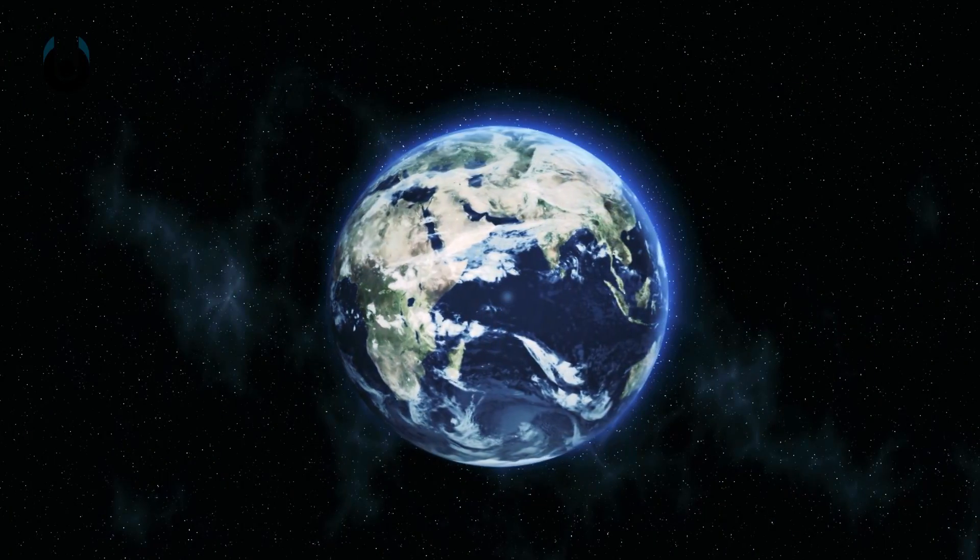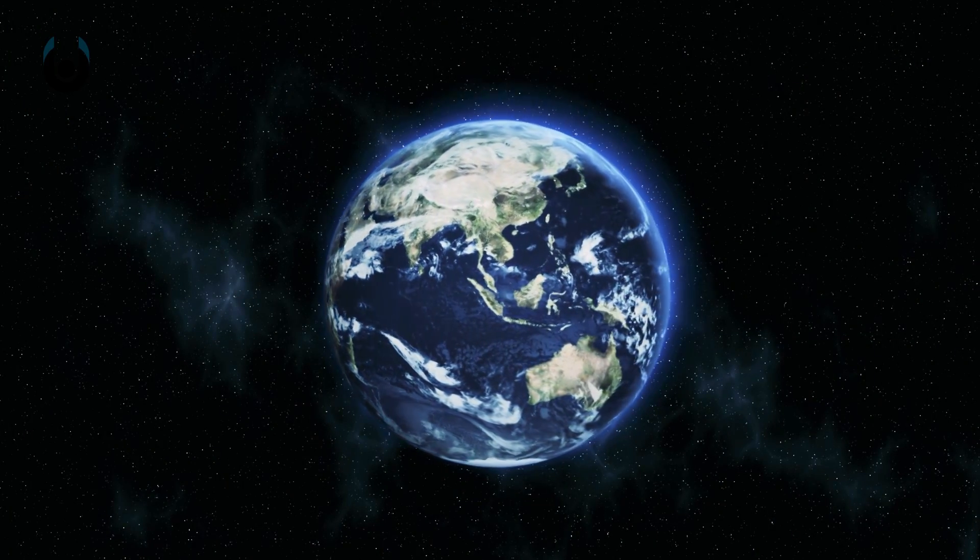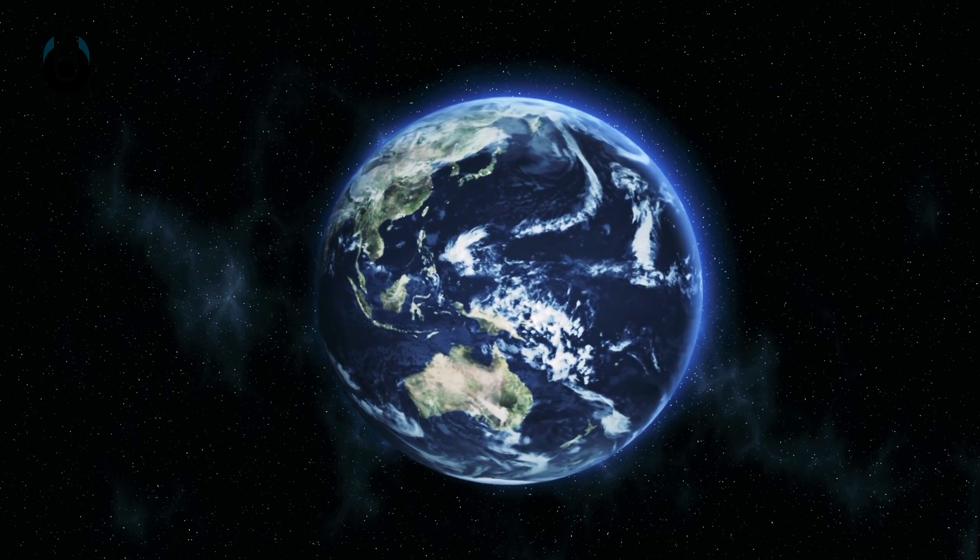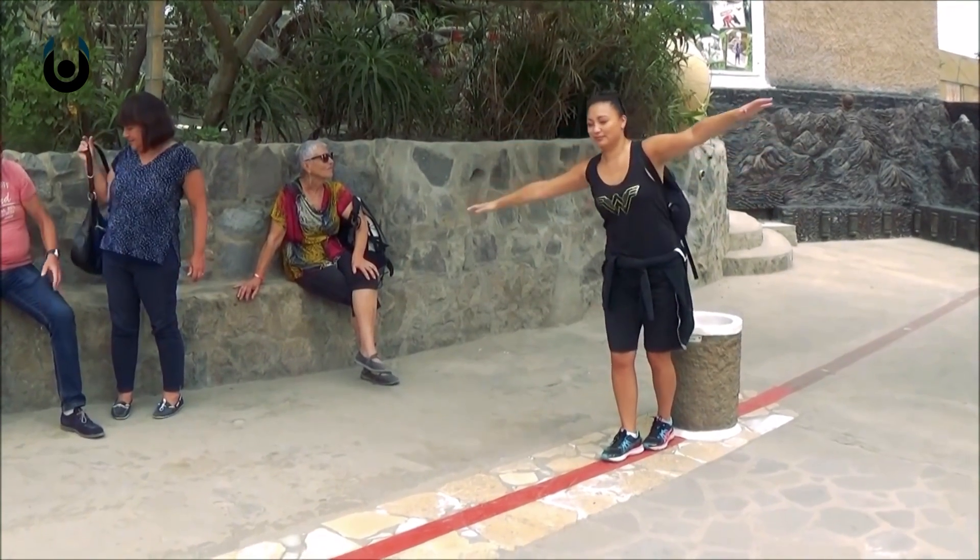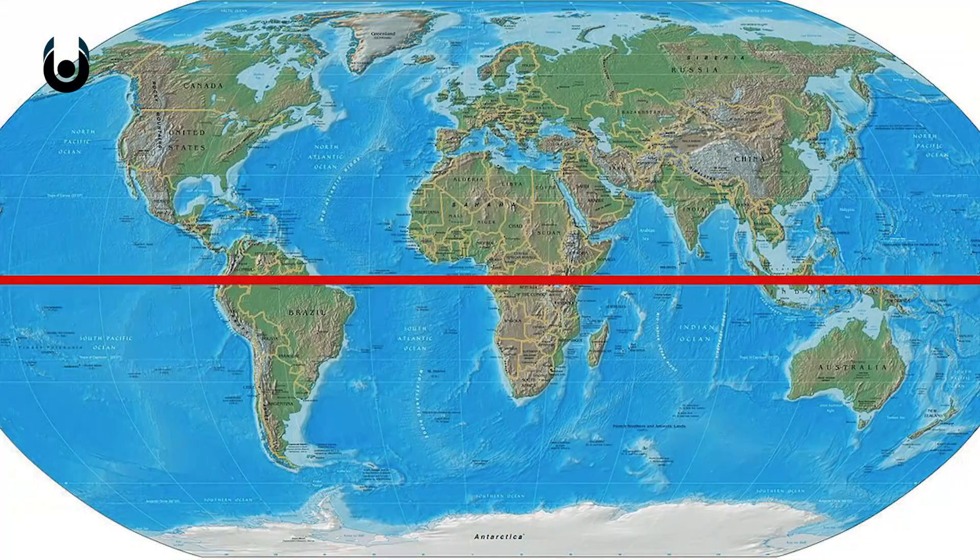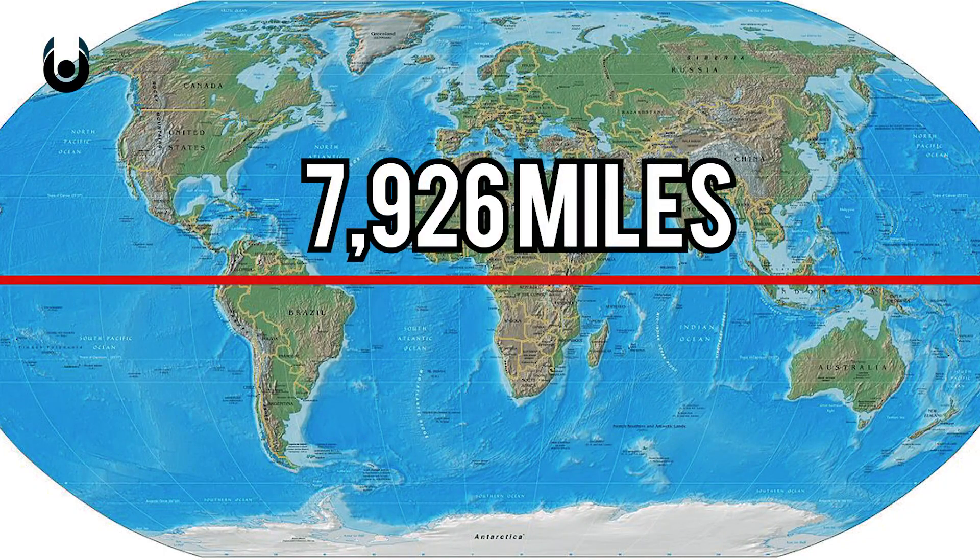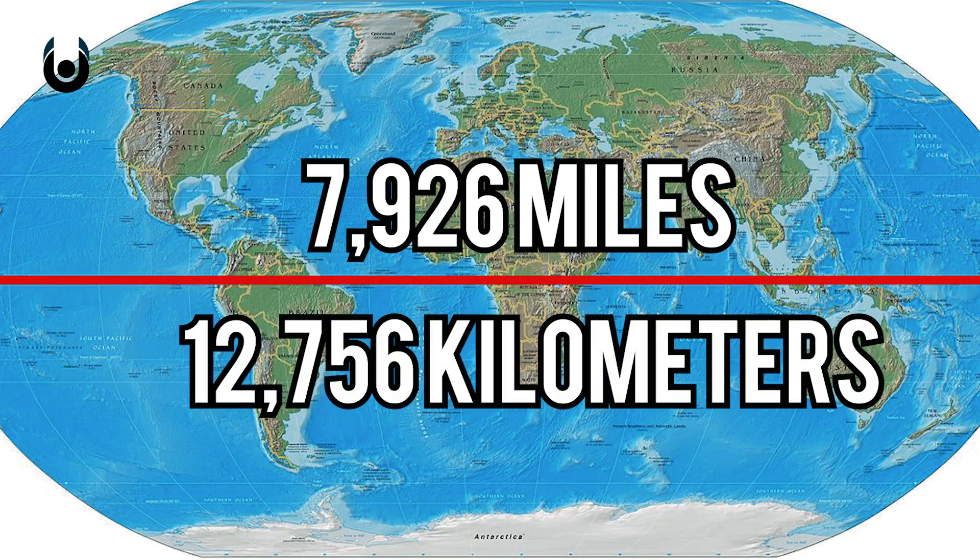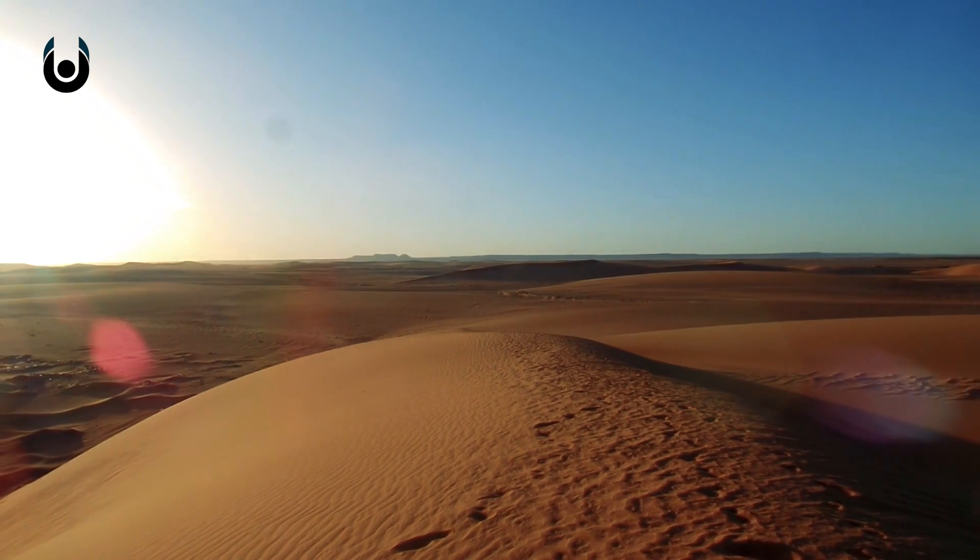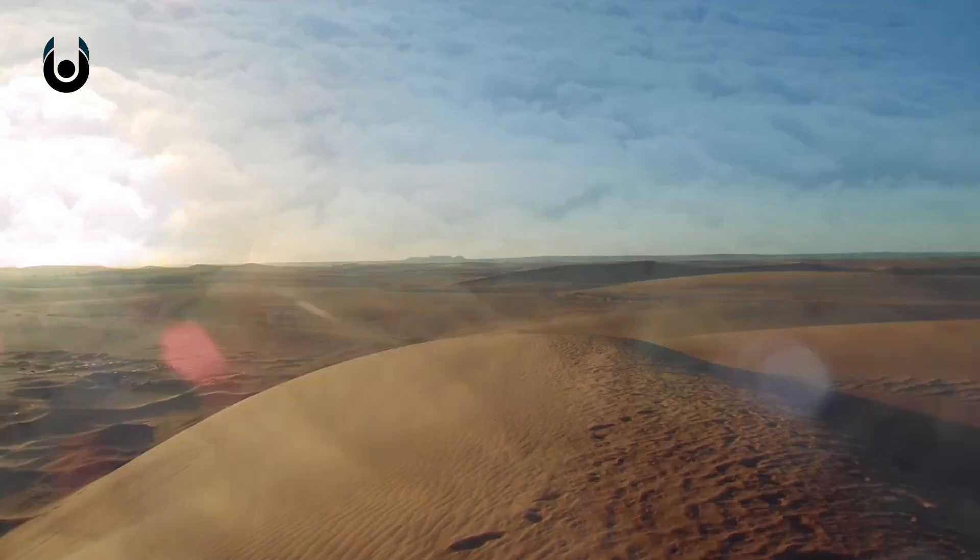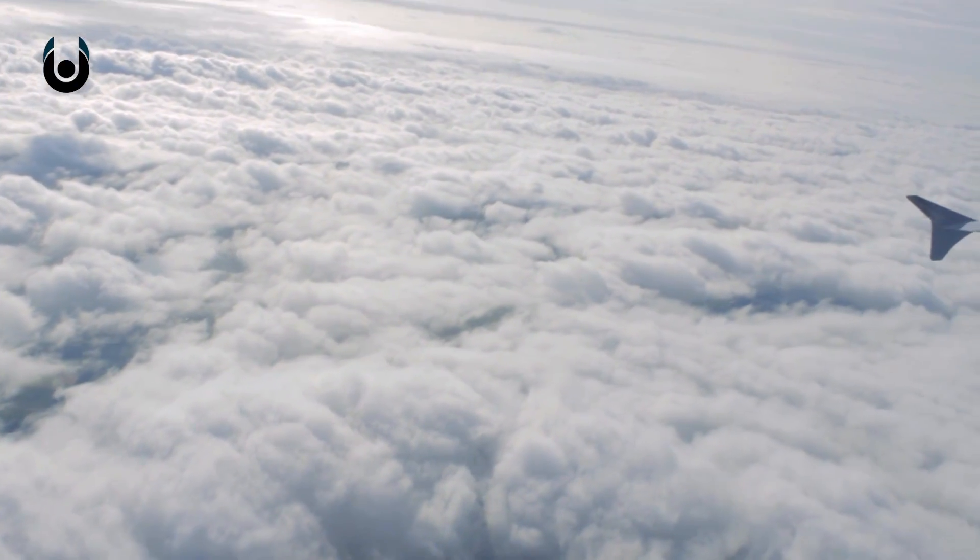The thing is that the Earth is so big that it's impossible to see its curvature when standing on the ground. Just how big? If we were to start at the equator and go around, the Earth's equatorial diameter is 7,926 miles or 12,756 kilometers. So standing on the ground to see the curvature of the Earth isn't possible anyway. But you could see this curvature of the Earth from any commercial flight, right?